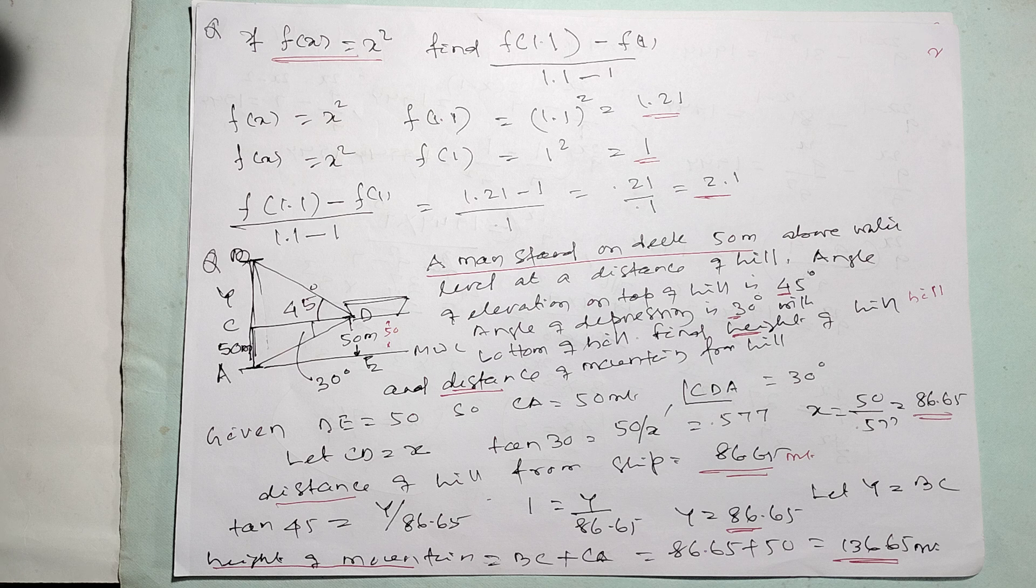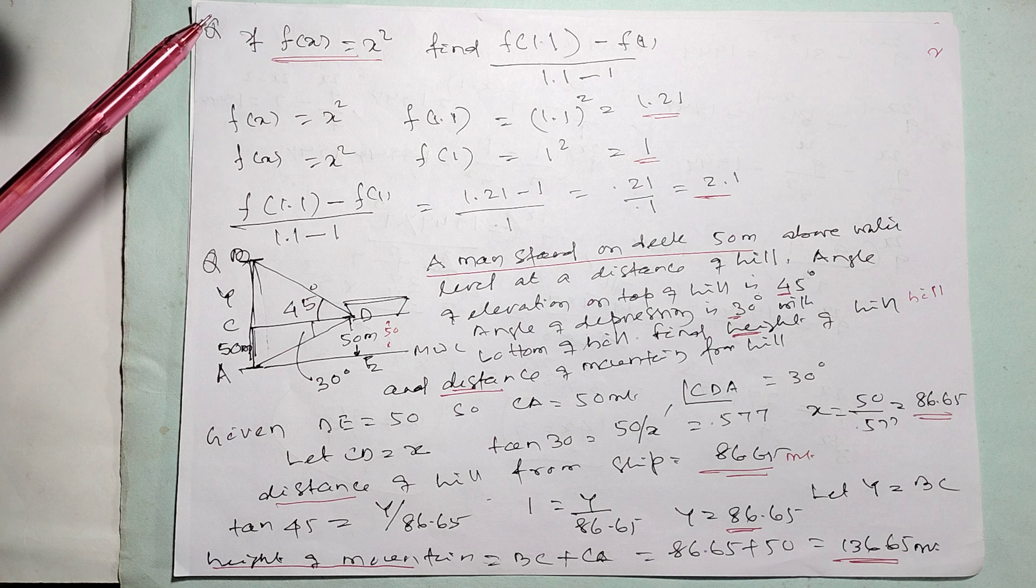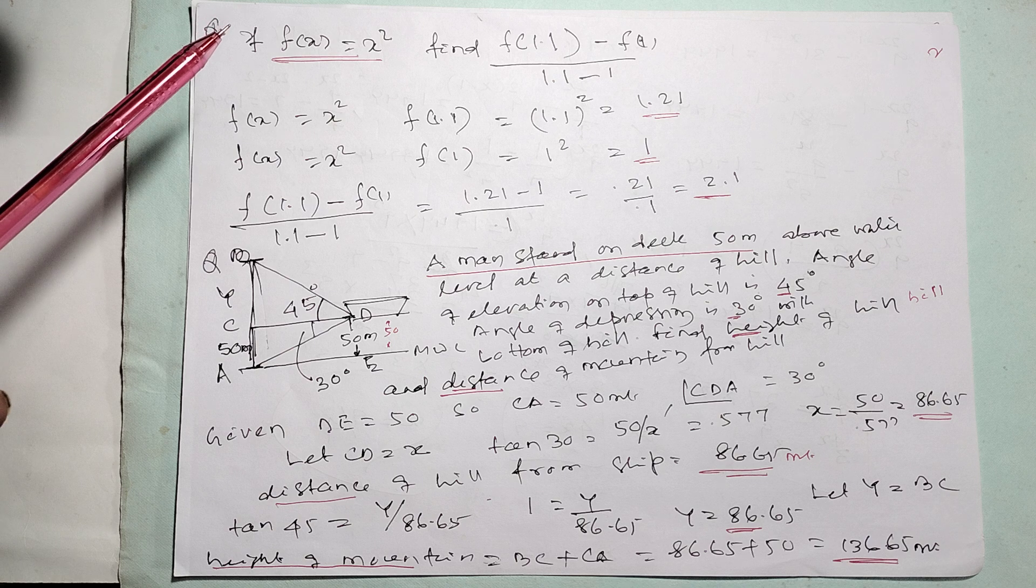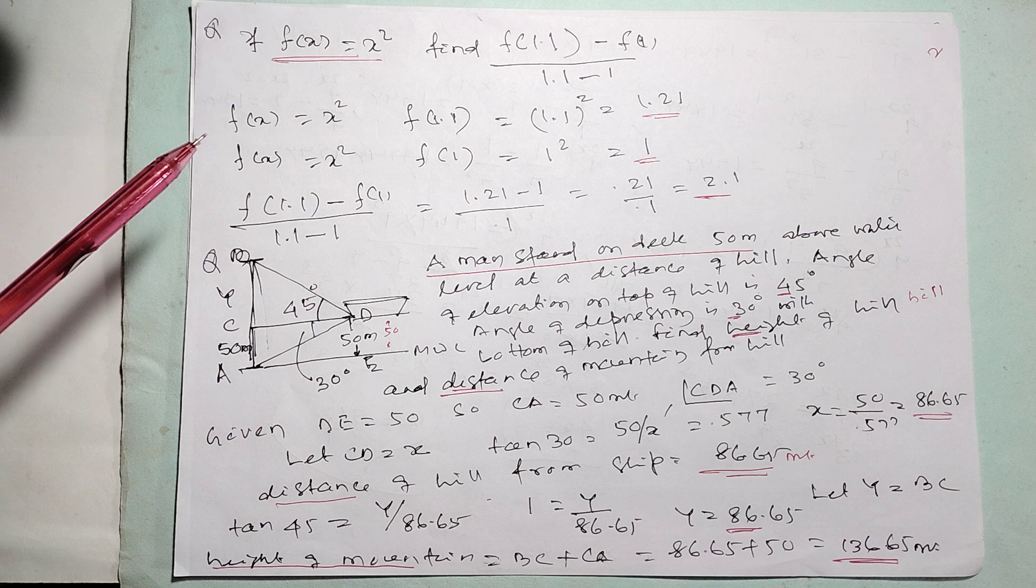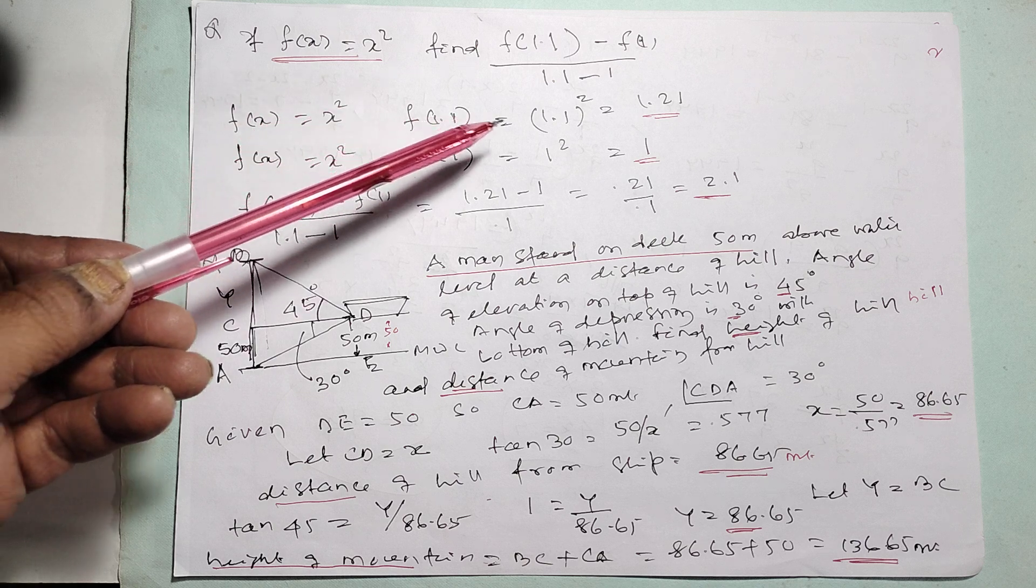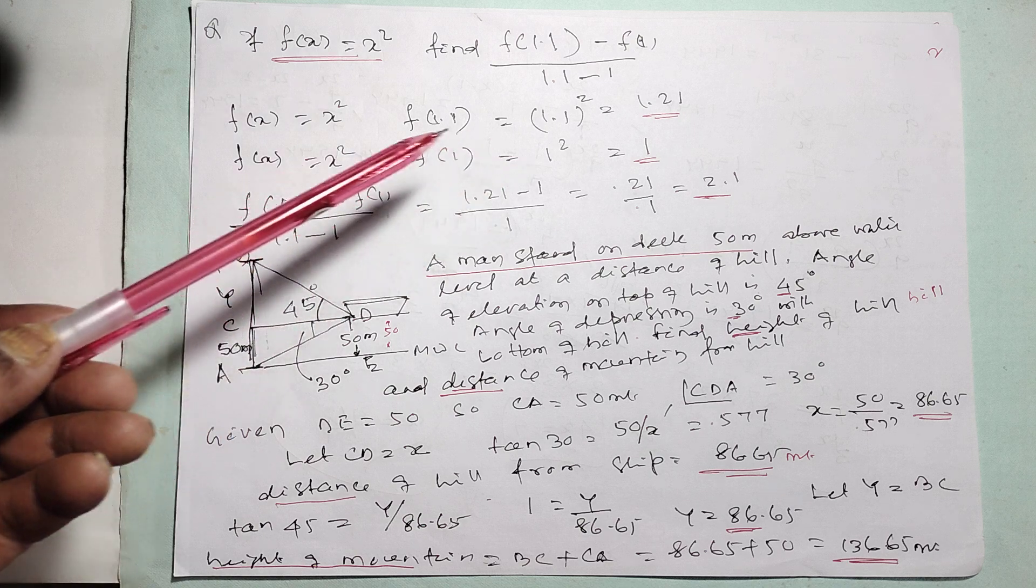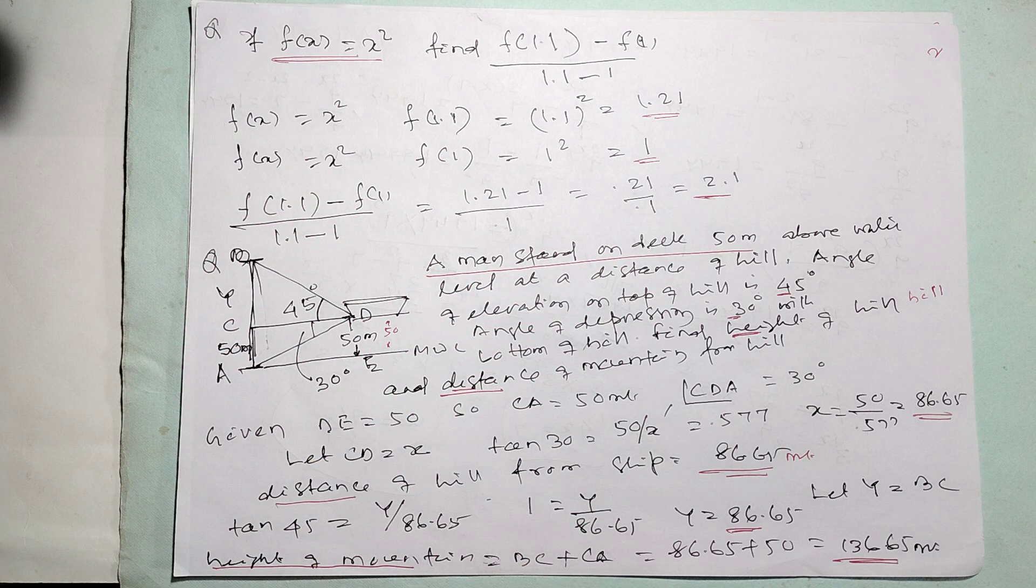There is one question from set theory. f of x is equal to x square. Find f(1.1) minus f(1). That way, 1.1 minus 1. This f of x equals x square means f(1.1) equal to 1.21. f of x is x square, f(1) equal to 1. After that, it is constant of 2.1.